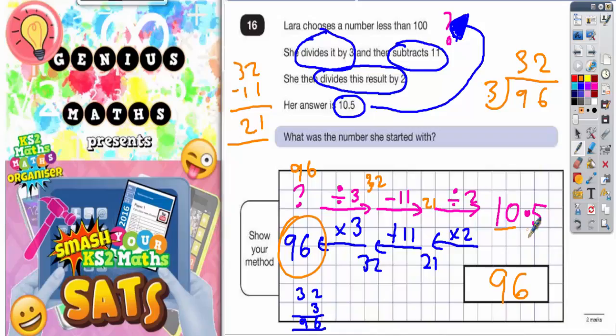And half of 1 is 0.5. So it does get you back to 10.5. Therefore, the answer is 96, and we've checked it, so we can give ourselves a tick.